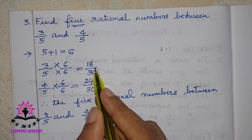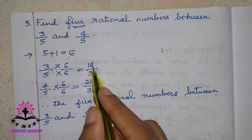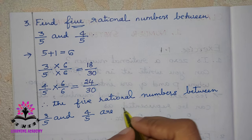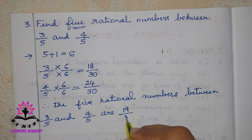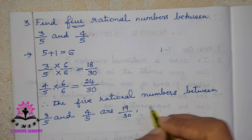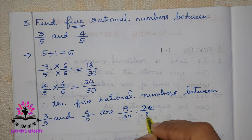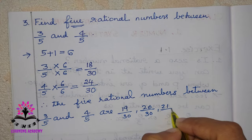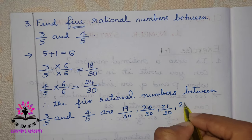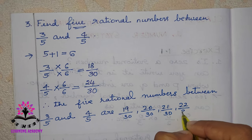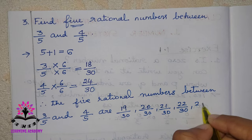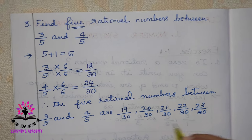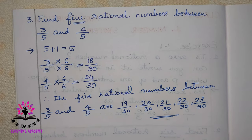After 18 by 30, the next numbers are 19 by 30, 20 by 30, 21 by 30, 22 by 30, and 23 by 30. This is the answer.